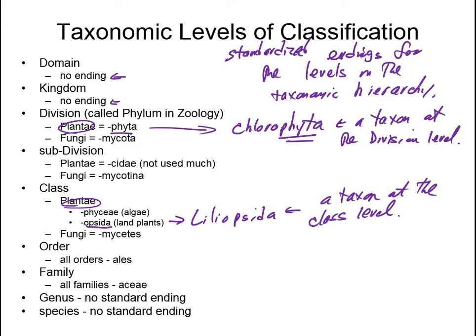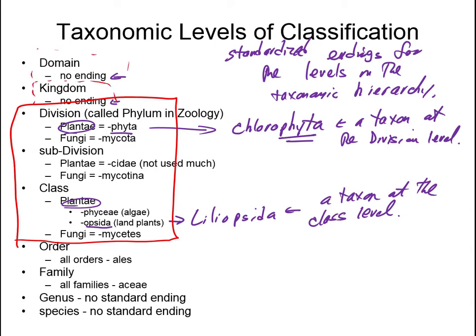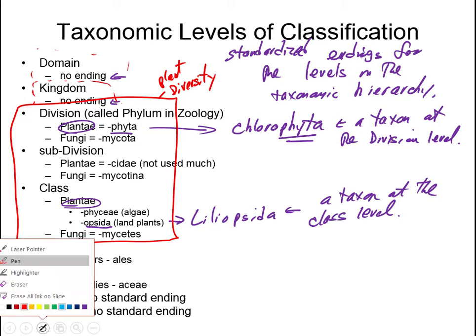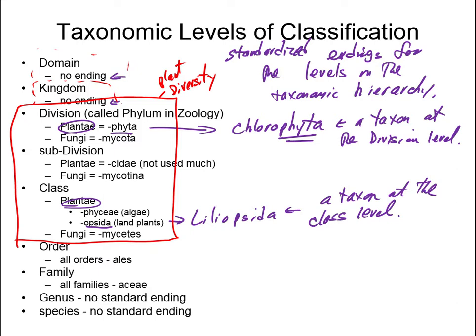This class is going to cover everything from the class level up through the division level. We'll say a little bit about the kingdoms and domains, but we won't mention them much again. We're not going to be concerned with orders or families. I teach another class, plant systematics, where we are mainly concerned with the family and generic levels.